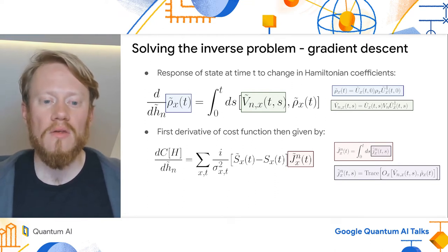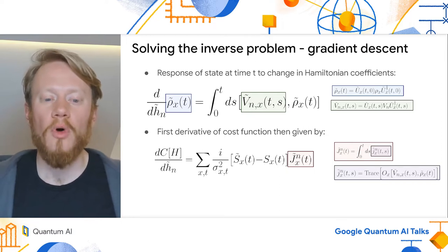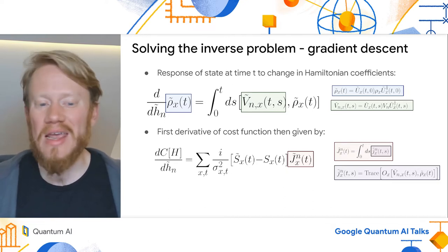One way of estimating these gradients is to go through the equation for the response of a quantum state at time t to a change in the Hamiltonian parameters. This has a simple form. We take the corresponding Hamiltonian term, evolve it from time s to time t, commute it with the quantum state at time t, and then integrate this over all previous times s.